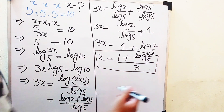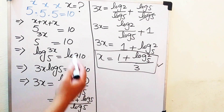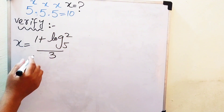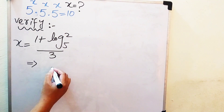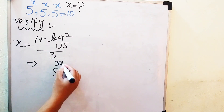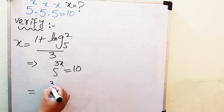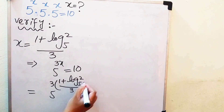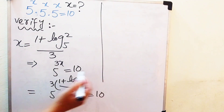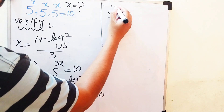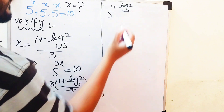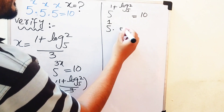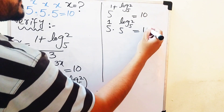Now we verify this value of x. We substitute it back into the left-hand side of the equation. Starting from 5 to the power of 3x equals 10, we substitute x equals (1 plus log base 5 of 2) divided by 3. The 3 cancels, and we obtain 5 to the power of (1 plus log base 5 of 2) equals 10. Separating the exponent gives 5 to the power of 1, times 5 to the power of log base 5 of 2, equals 10.